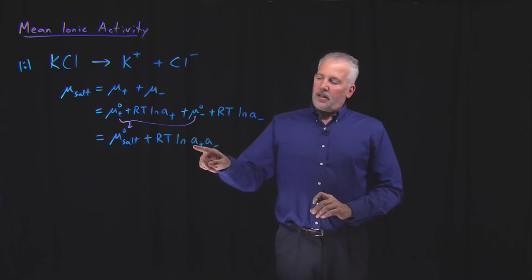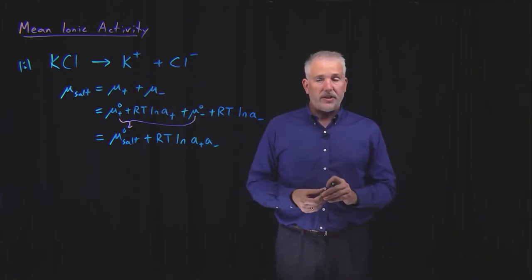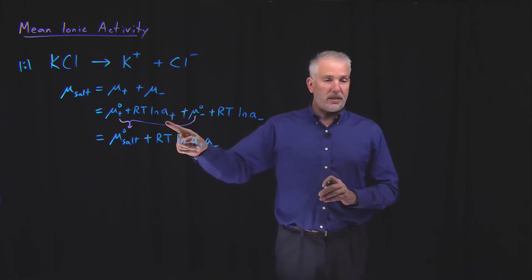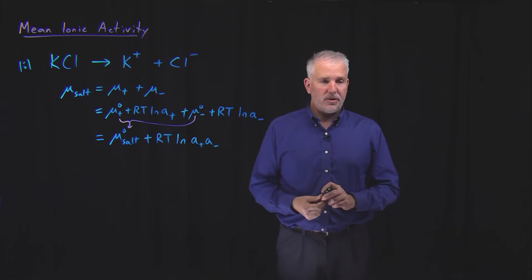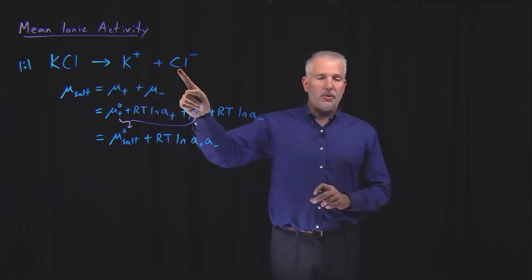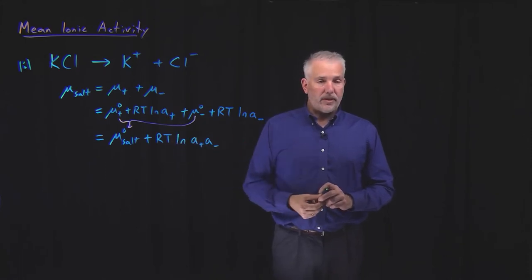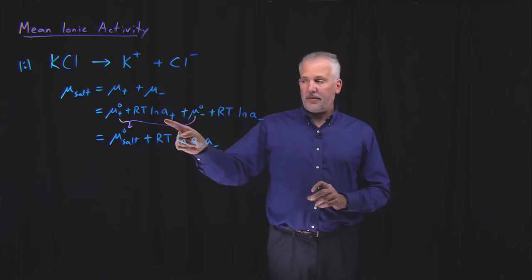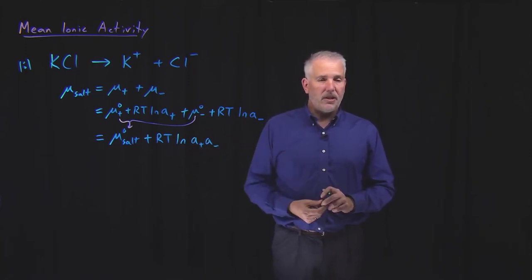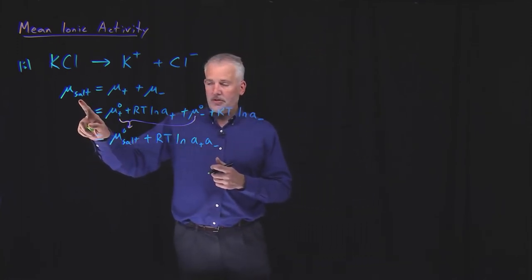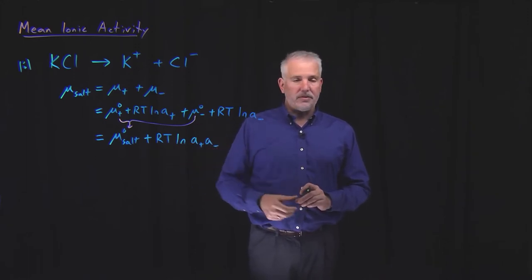Cations and anions always come in solution in the same ratio. In a one-to-one salt they come in a one-to-one ratio. If you wanted to prepare a solution with only potassium ions at one molal and nothing else, you can't do it — you can't dissolve potassium ions without bringing along some anion, perhaps chloride or nitrate. Every time you dissolve a cation, it comes paired with an anion. So we can rarely, if ever, directly measure the activity of bare cations or bare anions. What we can measure is this combination of cation with anion together: the chemical potential of the solute equals a standard state chemical potential plus RT ln of this combined activity.